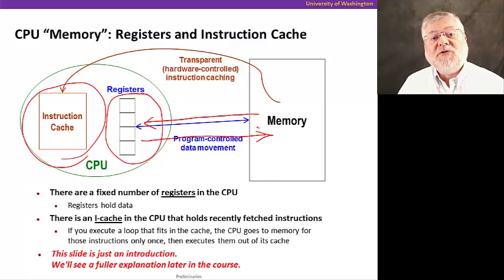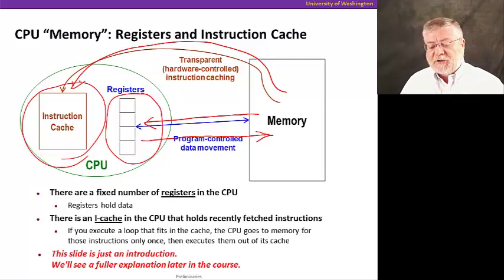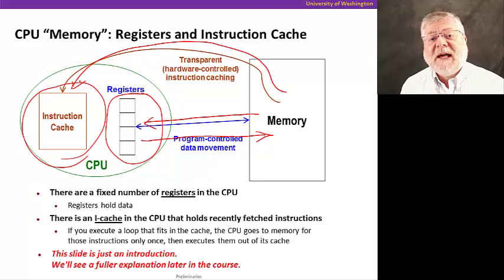This is done under program control. In other words, we'll have specific instructions to go get memory at a particular location in the memory and bring it into a particular register, and similarly going in the other direction, from a specific register to a specific location in memory. We'll also be getting instructions from memory into our instruction cache where the CPU will find the instructions to execute. This is done under hardware control. In other words, the CPU has its own devices for getting that next instruction, and figuring out whether it needs to go to memory to find it, or if it already has it in its cache.